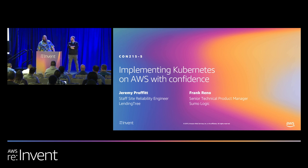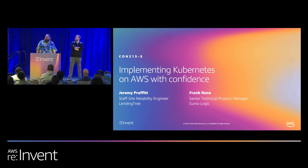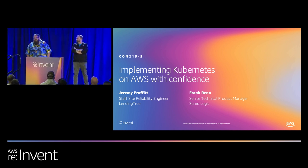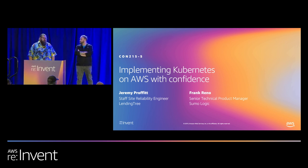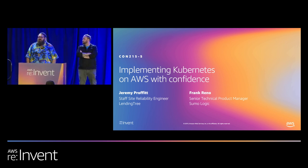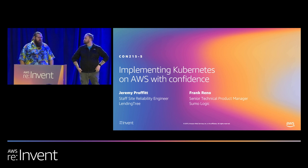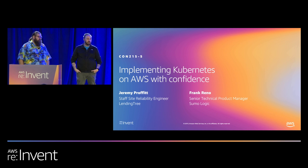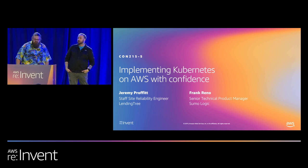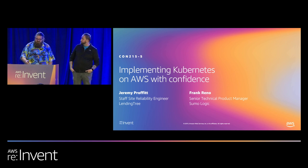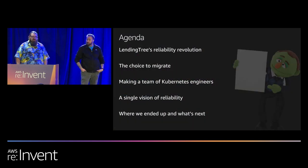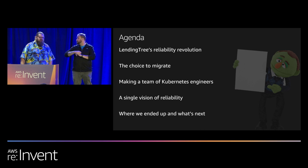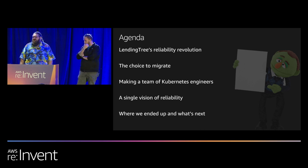My name is Jeremy Profit. I am the Staff Site Reliability Engineer at LendingTree. I was the first SRE at LendingTree and pretty much brought the reliability revolution there. Frank Reno here — I'm one of the product managers at Sumo Logic working on all things Kubernetes, containers, orchestration, and our metrics platform. Today we're going to talk about LendingTree and what we've done bringing Kubernetes and reliability into our day-to-day operations.